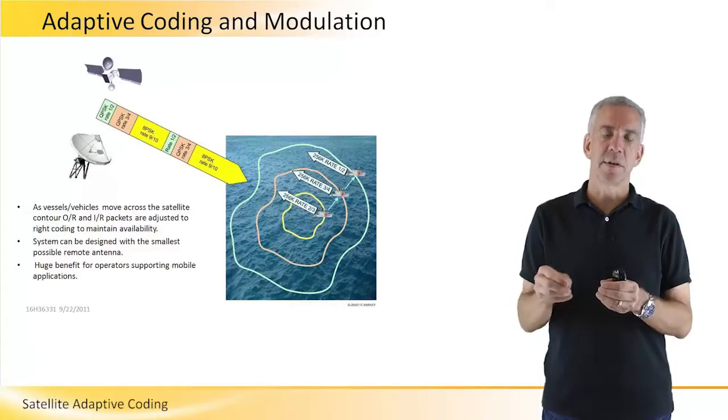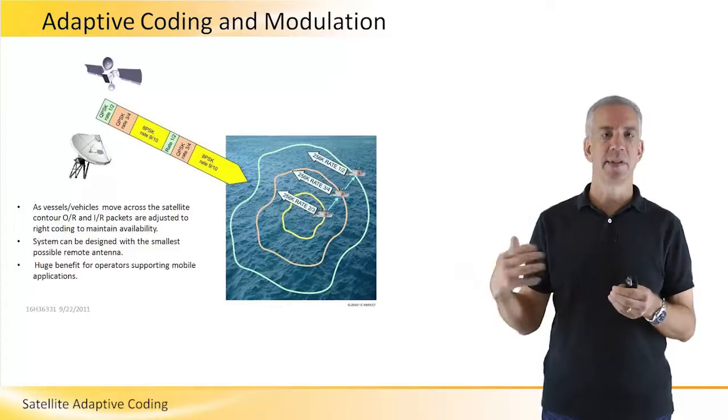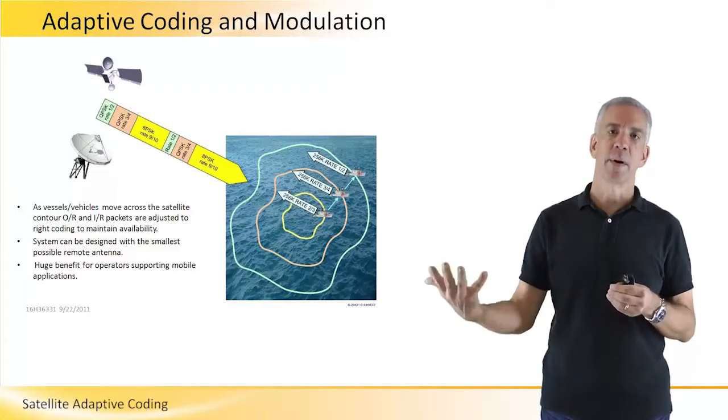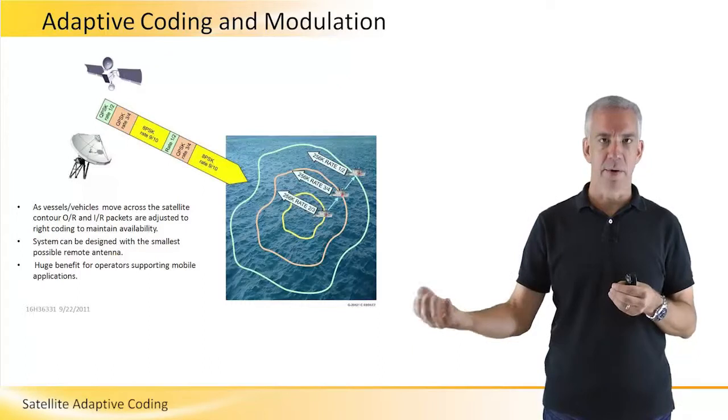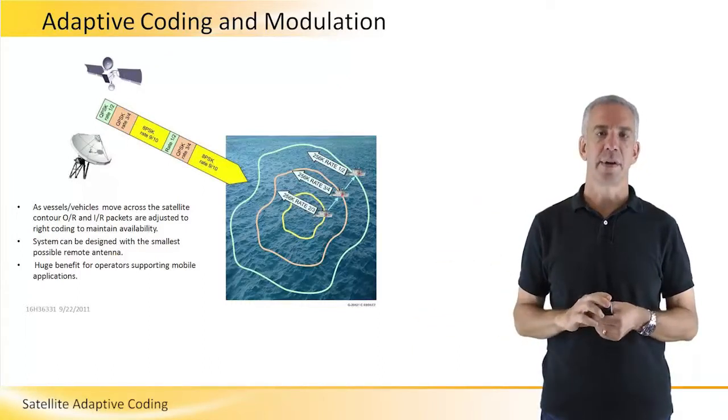But as a vessel or vehicle moves to the outer edge of the satellite footprint, the signal will become weaker. And that's where dynamically changing the mod code will enable us to maintain the link at all times.